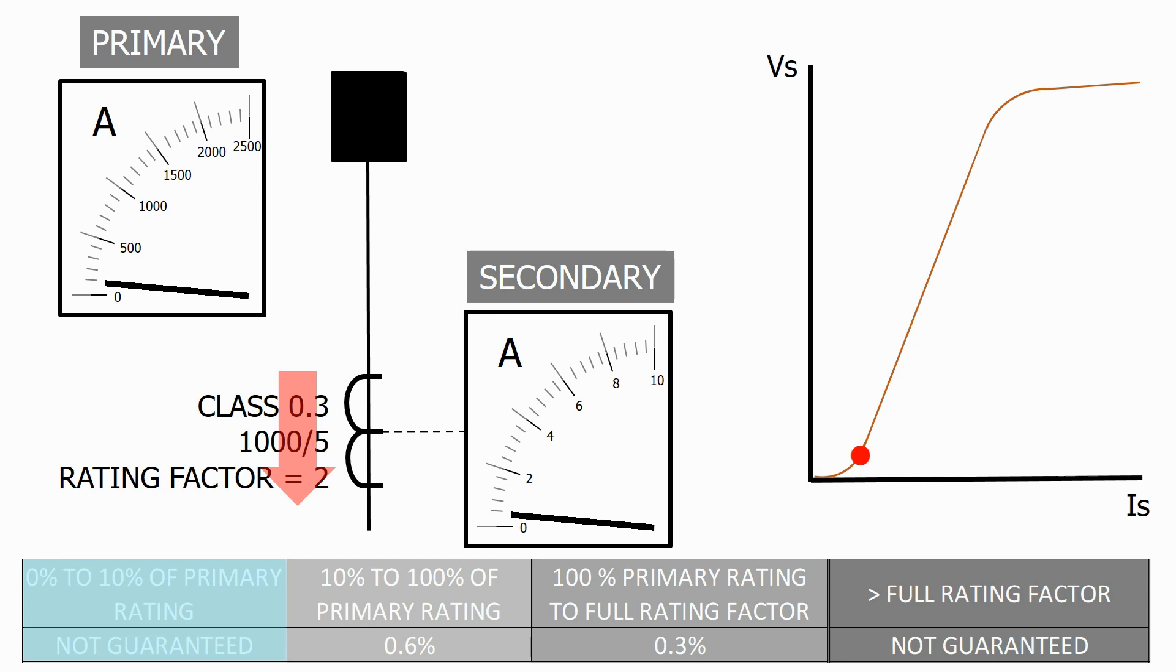Although some current will flow through the secondary circuit we are unable to guarantee the accuracy of the current value, and this is true from 0% to 10% of the primary rating. For this CT, 0 to 100 amps.